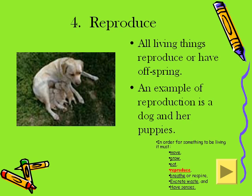Four: reproduce. All living things reproduce or have offspring. An example of reproduction is a dog and her puppies.